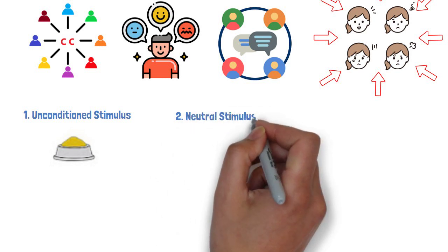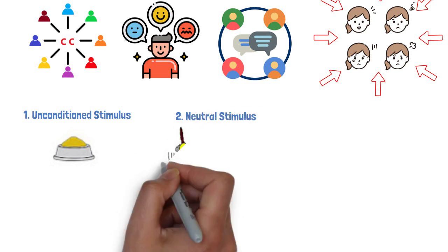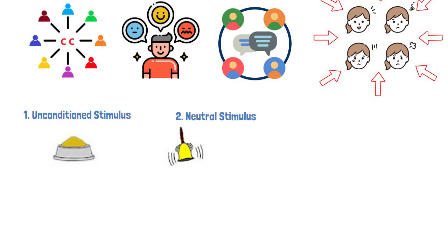2. Neutral stimulus is a trigger that doesn't lead to any response on its own, initially. The bell, before conditioning.